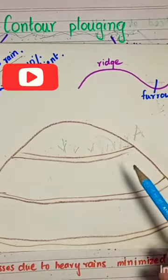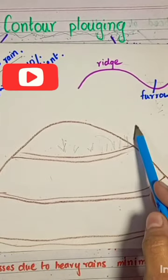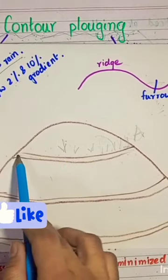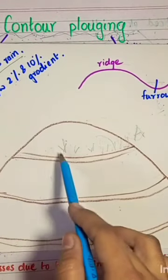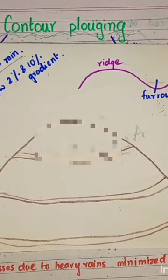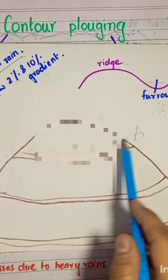How is it marked? It is marked with the help of a frame which is called as an A-frame. It is an instrument which is placed on different points here to identify the equal points of elevation. Then those equal points of elevations are connected and then the crops are planted across or along that contour line.